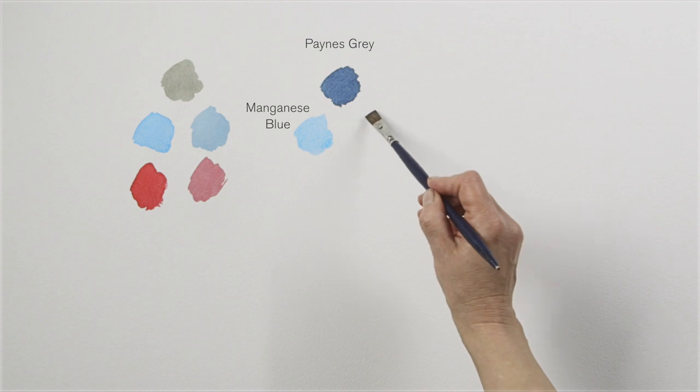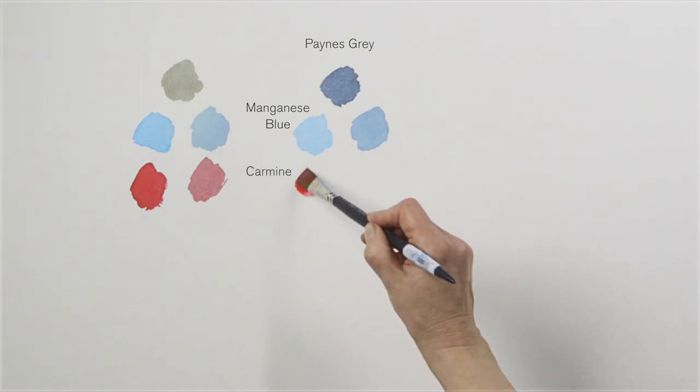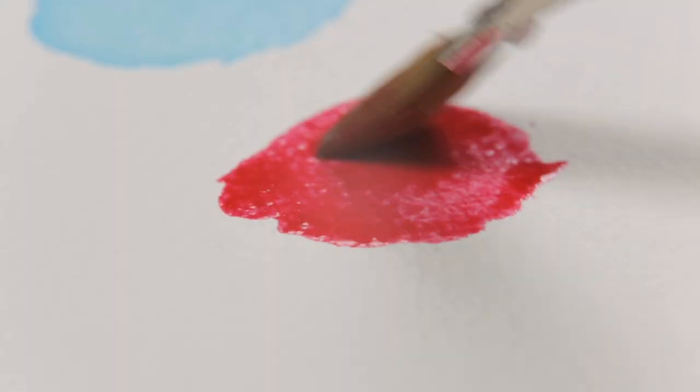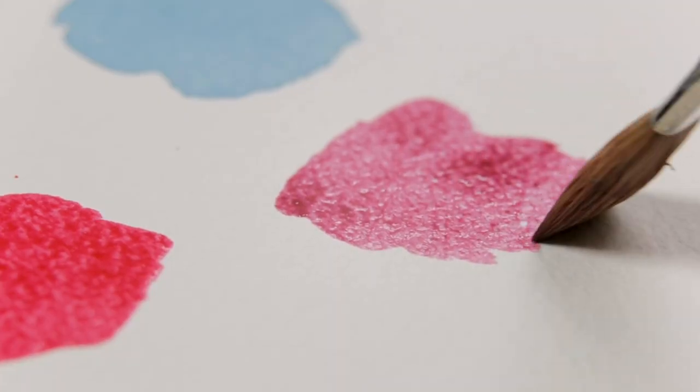Look what happens to the manganese blue hue when I add Payne's Grey to it. Now look at the way it alters the carmine.